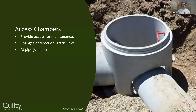Access chambers are provided where two pipes connect and change direction. They don't intentionally capture flows — no water drops in from the surface. They are provided at changes of pipe direction, changes of grade, changes of pipe levels, and at pipe junctions. You can connect pipes in series to form a bend, but typically you want to avoid that — if you're going to change direction, provide an access chamber at that location.